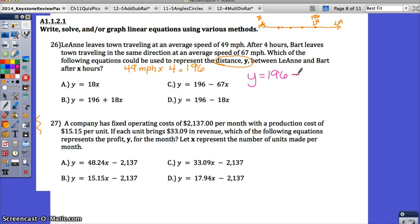You could make a table and list out the times and how far they've gone. Leanne's traveling 49 miles per hour. Bart's traveling 67 miles per hour. How many miles is he gaining on her each hour? To find how many miles he's gaining, find the difference between these two speeds. 67 minus 49 is 18. So the distance between the two is going to be decreasing by 18 per hour. You could solve this equation to find how many hours it would take for them to be at the same distance, but all you need to do is find the equation. So your answer is D.